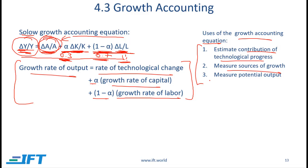The third use is to measure potential output. The tricky part is estimating the change in technology, but since it is an exogenous variable, we can use other methods to estimate the percentage change in technology. Once we have that estimate, we combine it with the other variables to calculate the percentage change in output. If we know the current output and the percentage change, we can project future potential output.